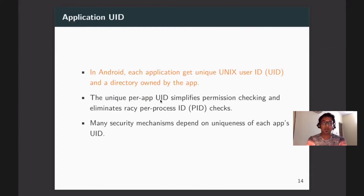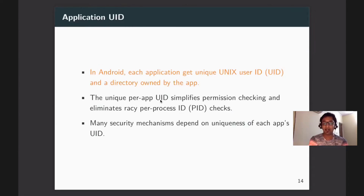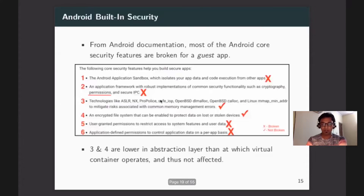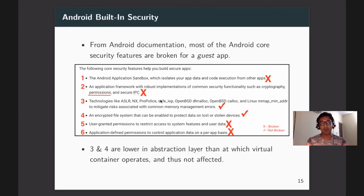In Android, whenever an application is installed, it gets a unique user ID and is assigned a directory owned by that application. This uniqueness of UID is used extensively for various security mechanisms. Looking at Android documentation, six core security points are listed, and out of those six, four are effectively not applicable when an application runs inside a virtual container. The two points that remain intact are below the abstraction layer — ASLR, DLmalloc, and file system encryption.